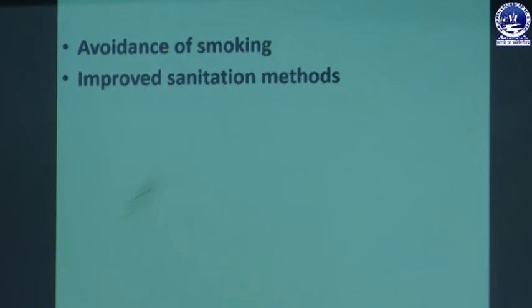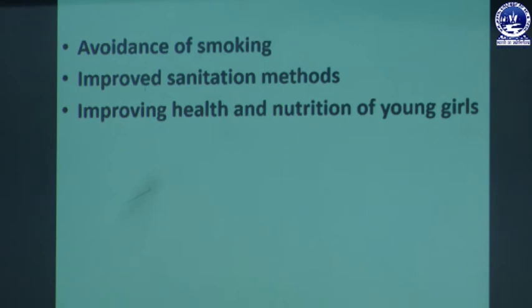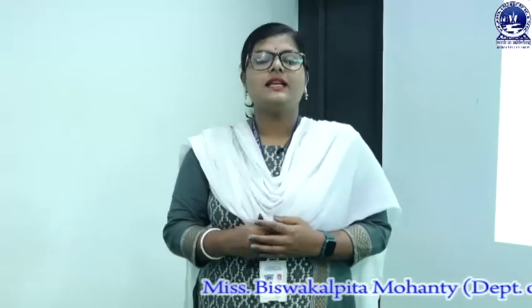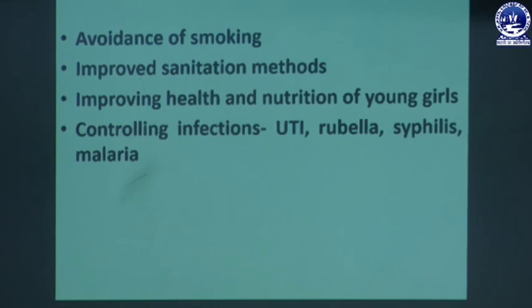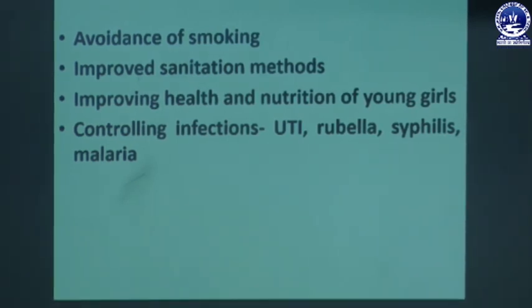Avoidance of smoking by the mother and family members is important. Improved sanitation methods — the mother and family should maintain a clean, sanitized environment. Improving health and nutrition of young girls is also key: at the young period girls undergo growth and development and need proper nutrients, but due to gender discrimination and inequality many girls do not receive the nutritious food necessary for them.